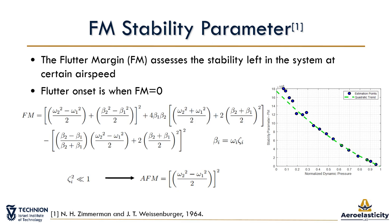We calculate the stability parameter with the two dominant modes that participate in flutter using the following equation, where omega is the frequency and beta is the frequency times damping. In experimental cases, it is hard to get an accurate assessment of the model damping, and as the modal damping values are small relative to the frequencies, the terms multiplied by zeta squared can be neglected. So we can evaluate the approximate flutter margin, AFM, to get an assessment of the flutter onset when the frequency identification is good enough.